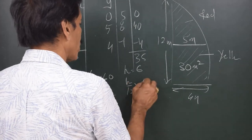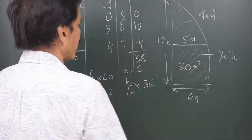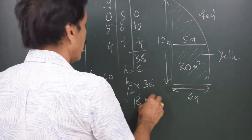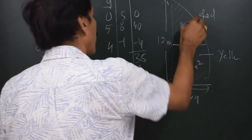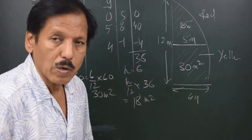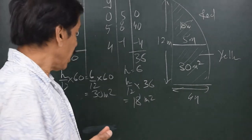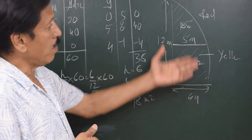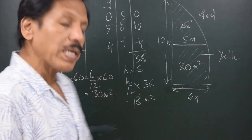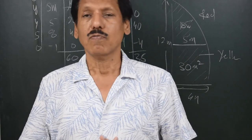To find the other area (between zero and four meters), the ordinates are ordered as zero, five, and four. Using multipliers 5-8-(-1) gives products 0, 40, and -4, totaling 36. The area is (6/12) × 36 = 18 square meters. So one area is 30 square meters and the other is 18 square meters.